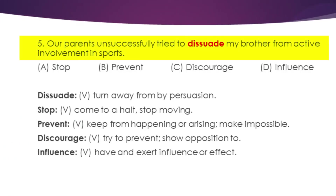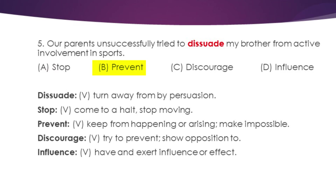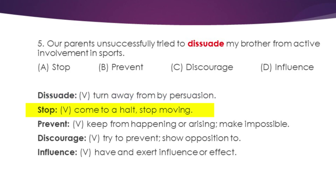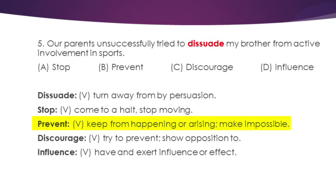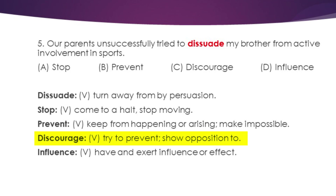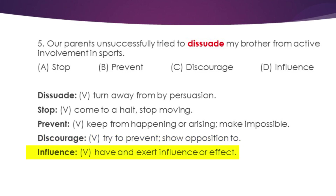And finally, our parents unsuccessfully tried to dissuade my brother from active involvement in sports. Our word for consideration is 'dissuade'. Our options are A — stop, B — prevent, C — discourage, and D — influence. Dissuade is a verb which means to turn away by persuasion. Stop is a verb meaning come to a halt, stop moving. Prevent is a verb meaning keep from happening or arising, making impossible. Discourage is a verb meaning to prevent, show opposition to. Influence is also a verb meaning to have or exert influence or effect.